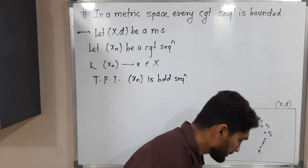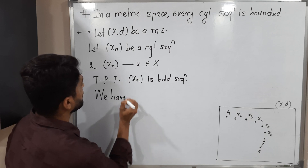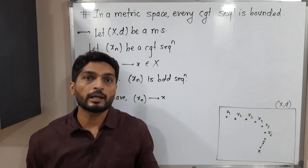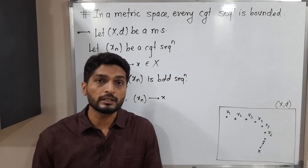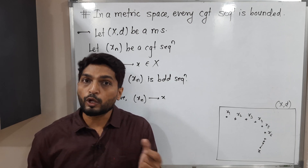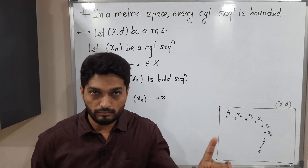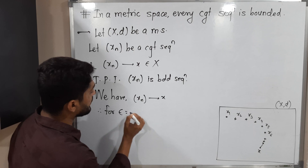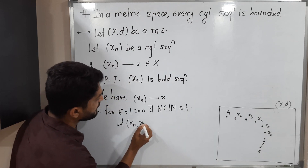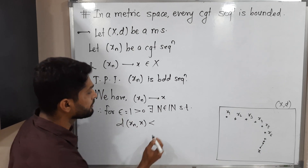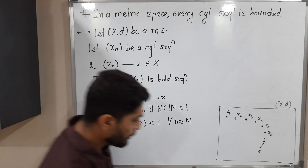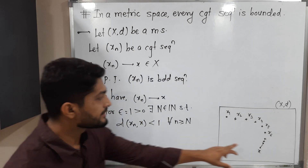We use the definition of convergent sequence: for given epsilon greater than zero, there exists N in the set of natural numbers such that d(xn, x) is less than epsilon for all n greater than or equal to N. Here I am taking epsilon equal to 1. So there exists N in the natural numbers such that d(xn, x) is less than 1 for all n greater than or equal to N.